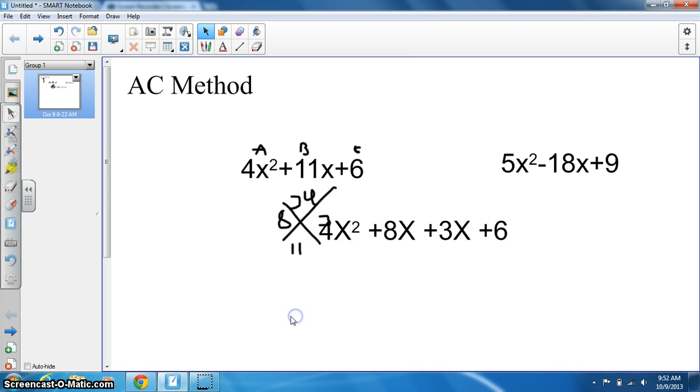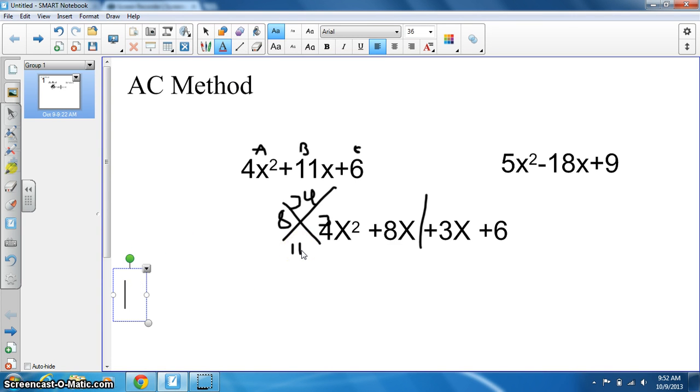Again, we factor by grouping. Split this in half and take the greatest common factors of both parts. The greatest common factor of the first part is 4, leaving us with 4(x + 2).